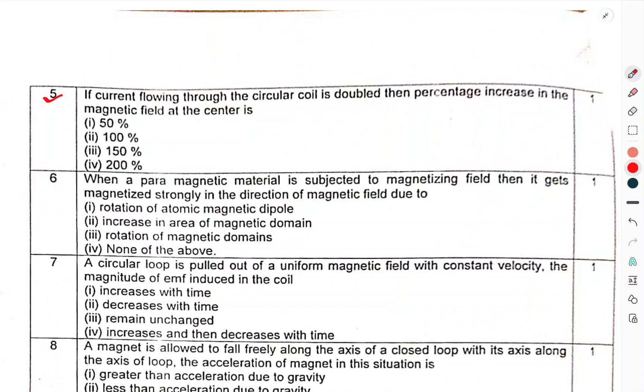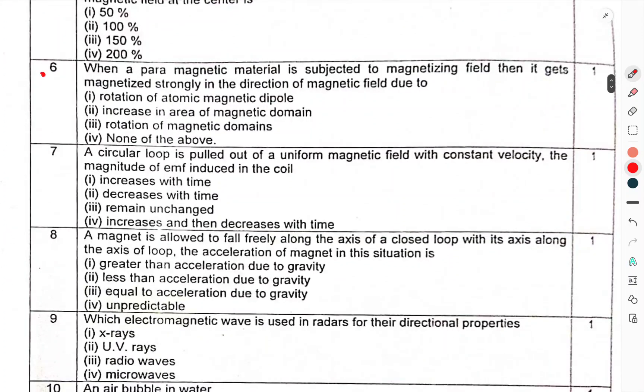Question 5: If the current flowing through a circular coil is doubled, then the percentage increase in the magnetic field at the center is. Question 6: When a paramagnetic material is subjected to a magnetizing field, then it gets magnetized strongly in the direction of the magnetic field due to?